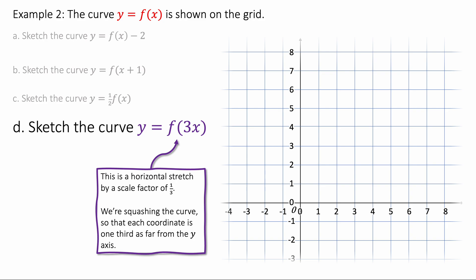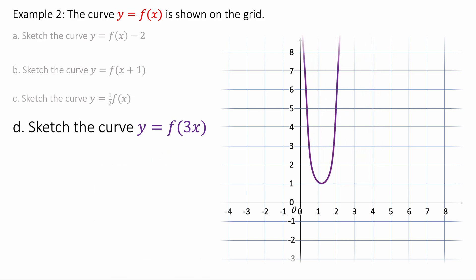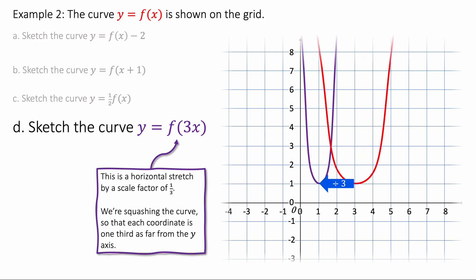Finally, we've got y equals f of 3x. And this is a horizontal stretch by scale factor 1 over 3. Remember when it's inside the brackets and it's 3 times x, the scale factor is 1 over 3. And so we're squashing the curve so that each corner is 1 third as far from the y axis. And it will look like this. So we've squashed the curve by dividing every x corner by 3.